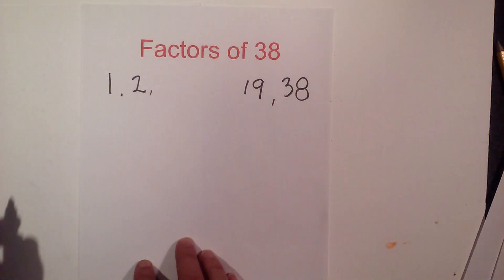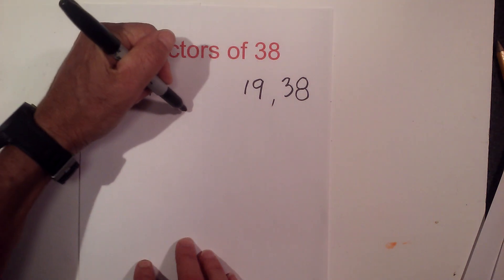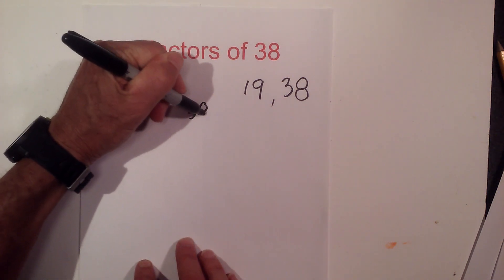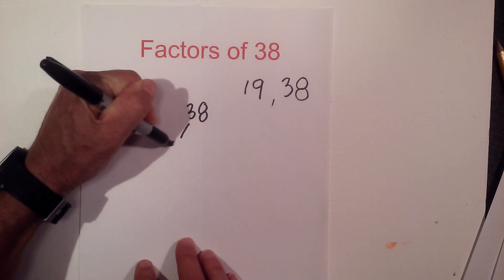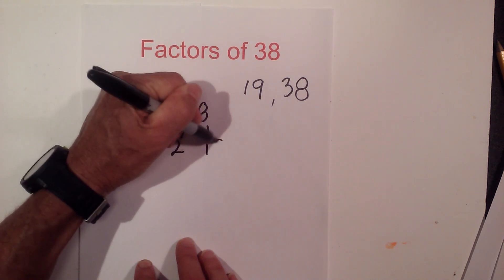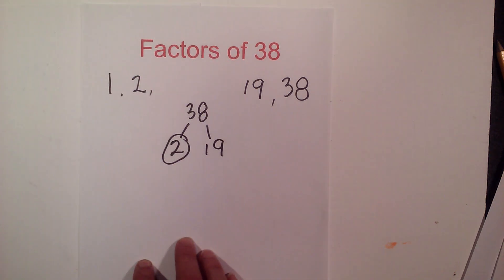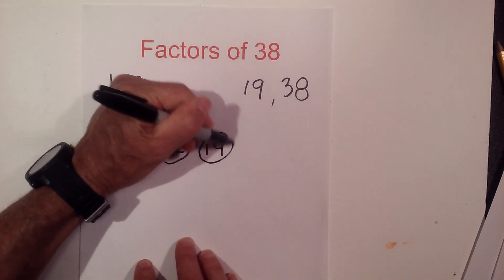Now if we create a factor tree for 38 to find all the prime numbers, it will be very similar. 2 times 19 equals 38. I will circle the 2 because it is prime and also the 19.